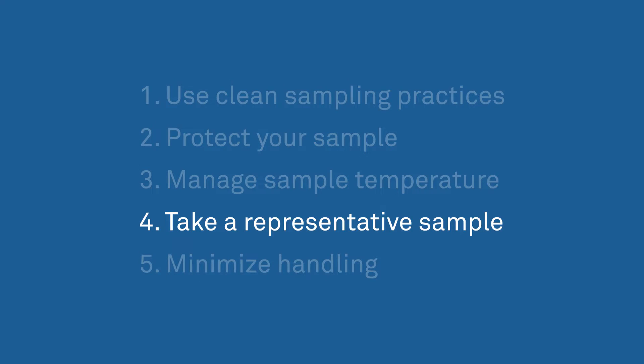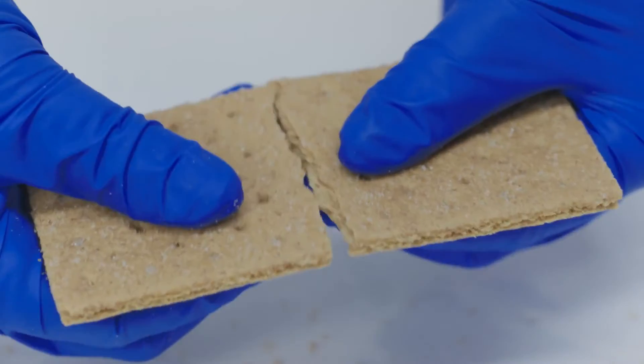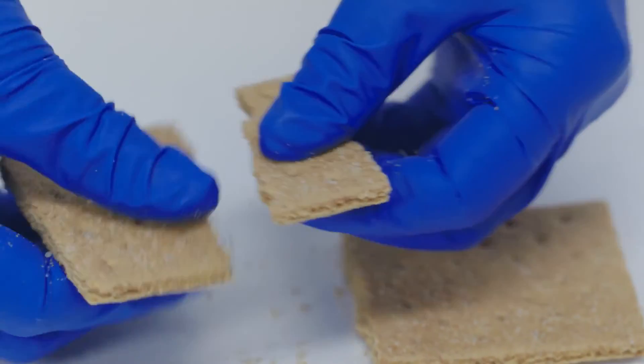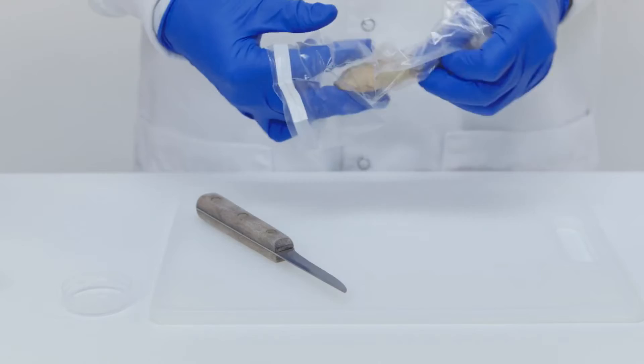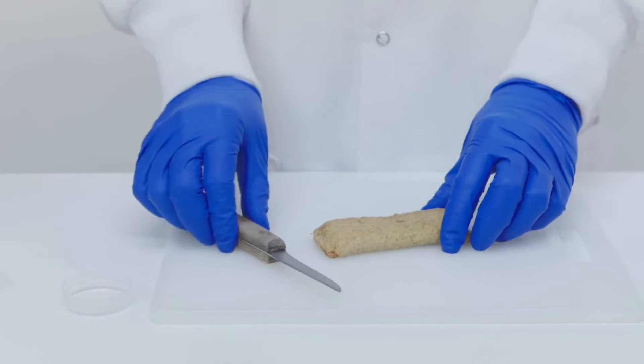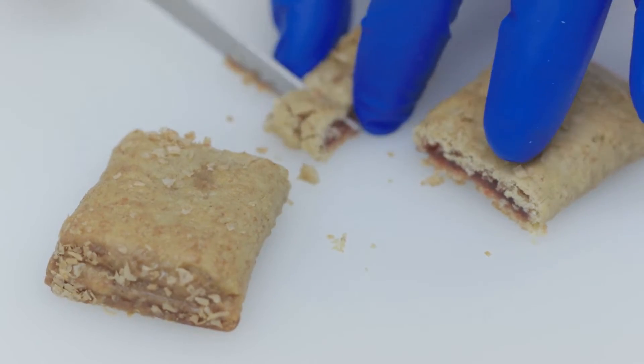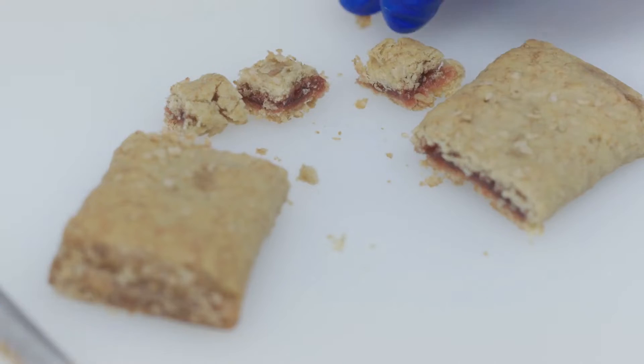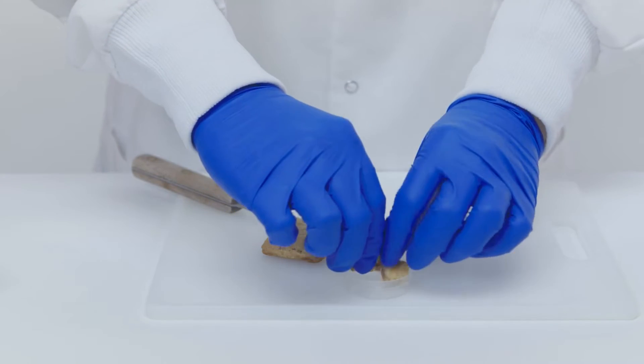Four, take a representative sample. Whatever you put in the cup should be as close as possible to what the consumer takes out of the package. If the product won't fit, break it to fit, while minimizing handling. If it's a multi-component product like filled cake, cheese and crackers, or cereal with fruit, get a representative sample. By representative, we mean that all the components of the product should be represented in the same ratio as they are in the actual product.